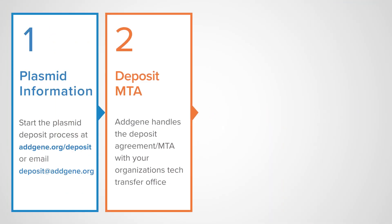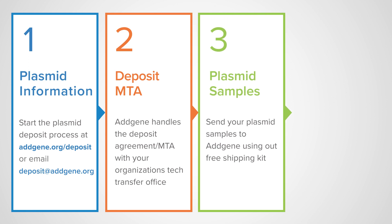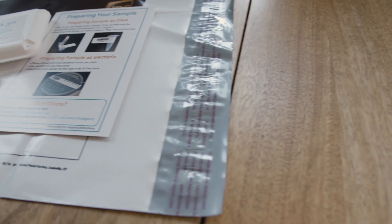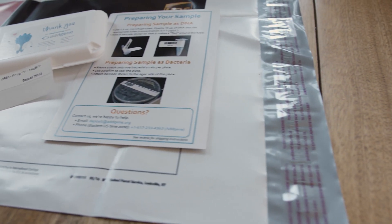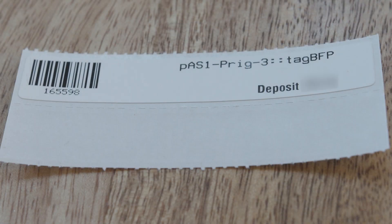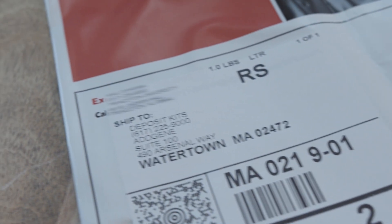As soon as the Material Transfer Agreement is finalized, we'll send you a deposit kit, which is a plastic box to protect your samples, barcode stickers, and an envelope that is prepaid by Addgene.